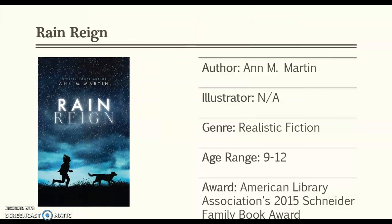Here we have Rain Vane, and this is a wonderful book. It is about a girl with autism named Rose and her dog named Rain. One thing you should know about Rose is that she loves homonyms — words that are spelled differently but sound the same, like rain and reign. This book is very exciting and gripping. It involves Rose's dog being lost in a hurricane and her finding her again. I would highly recommend it.